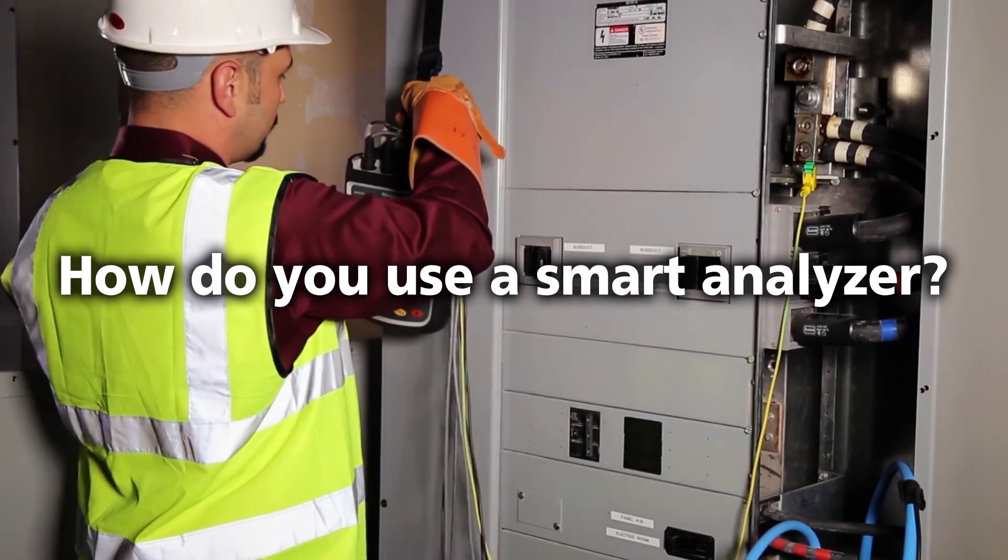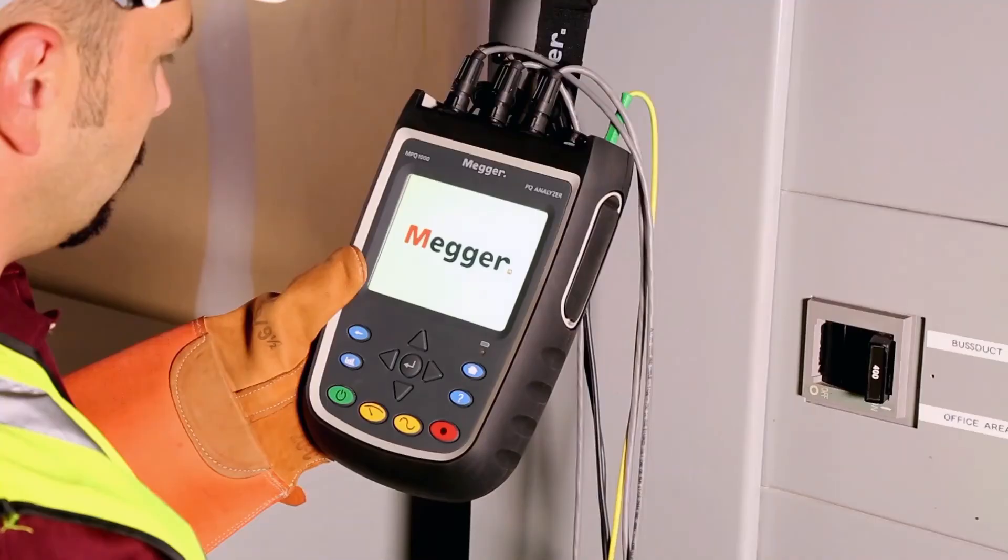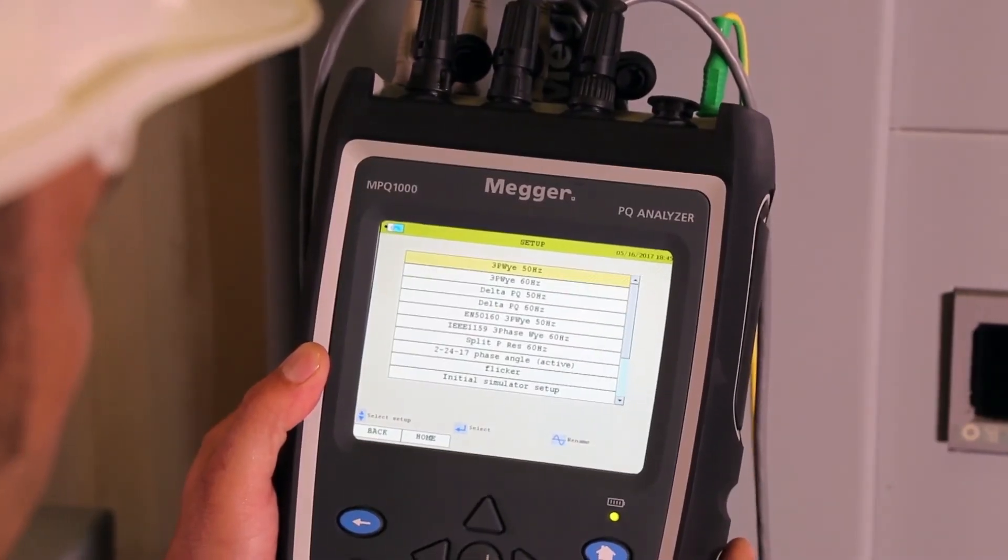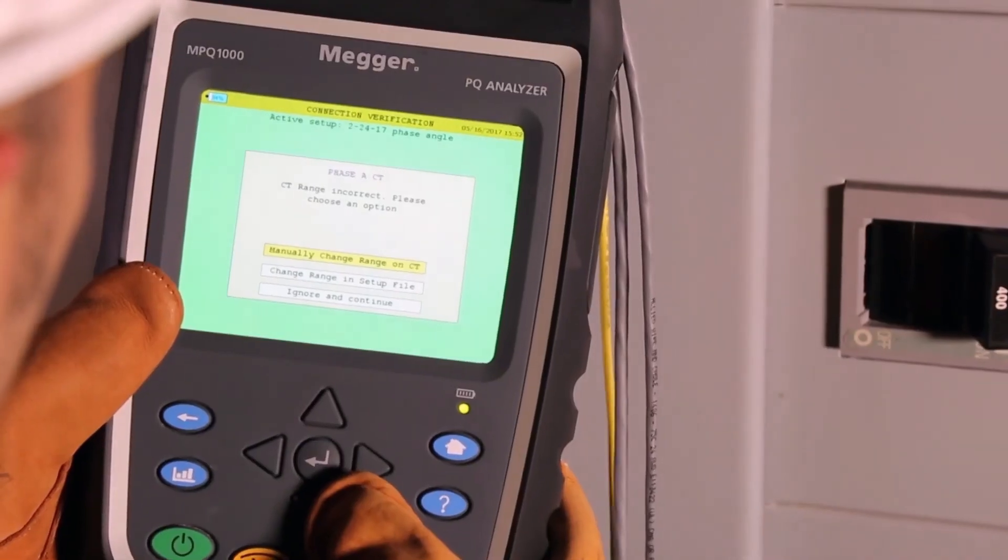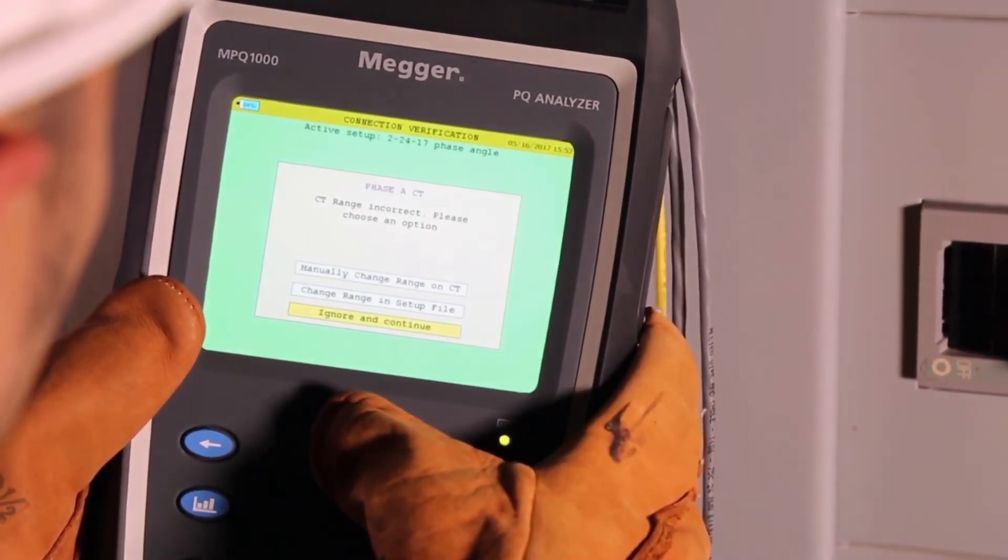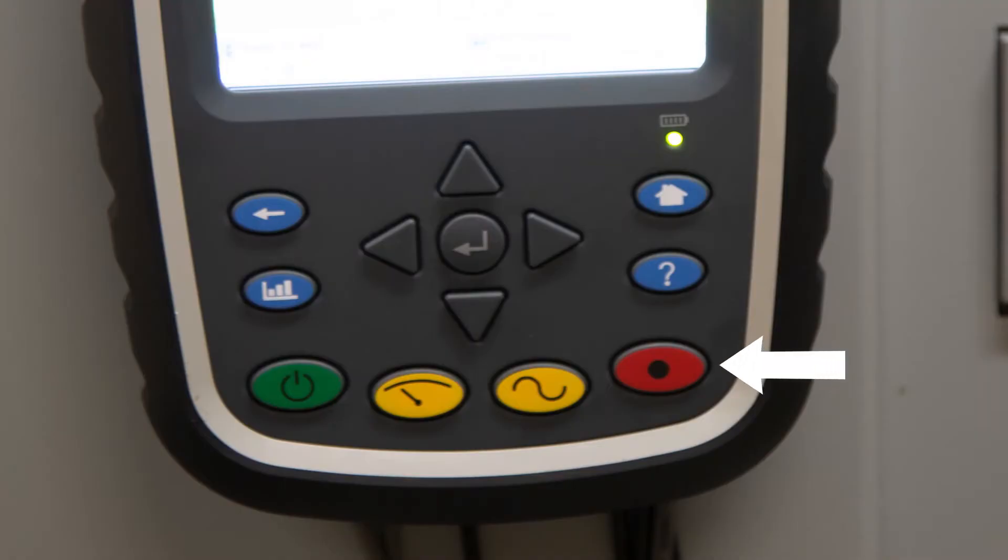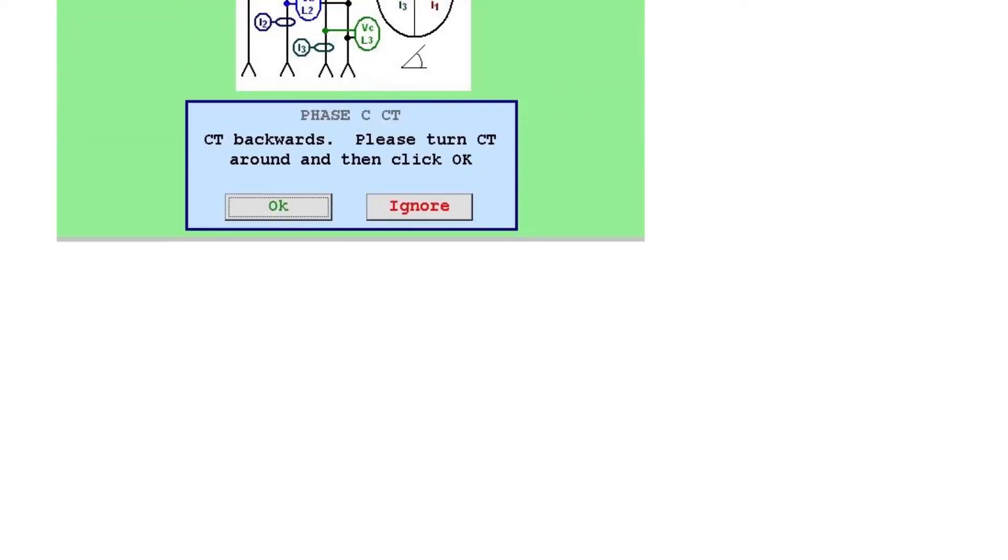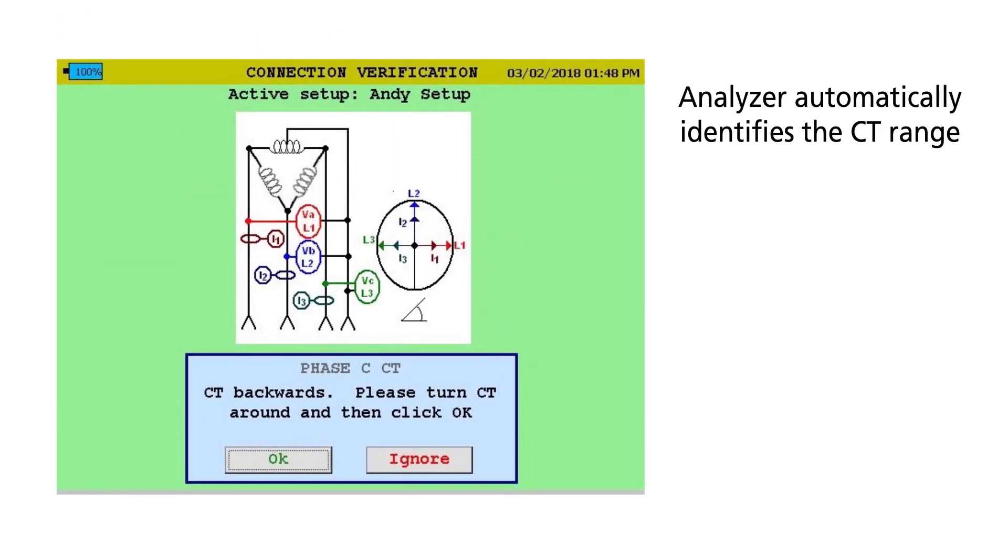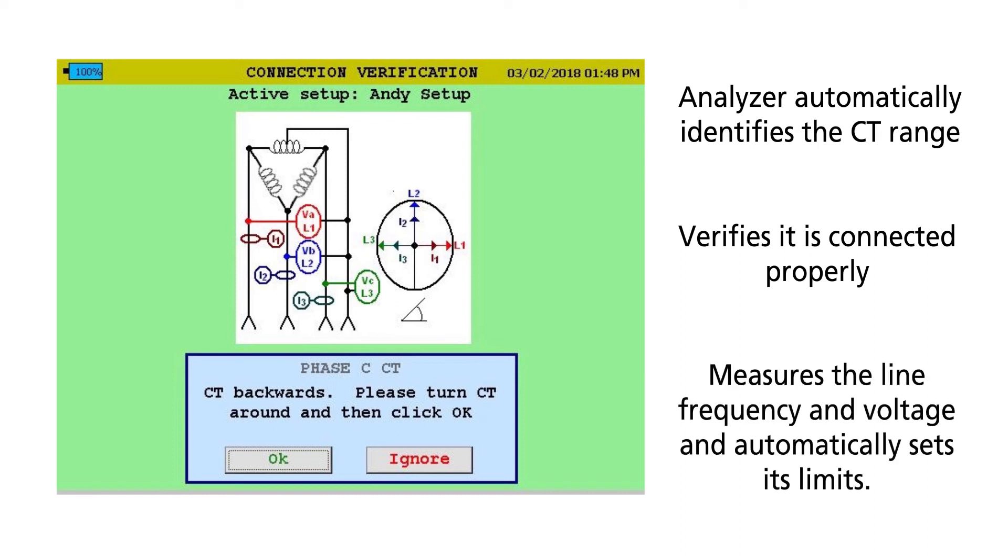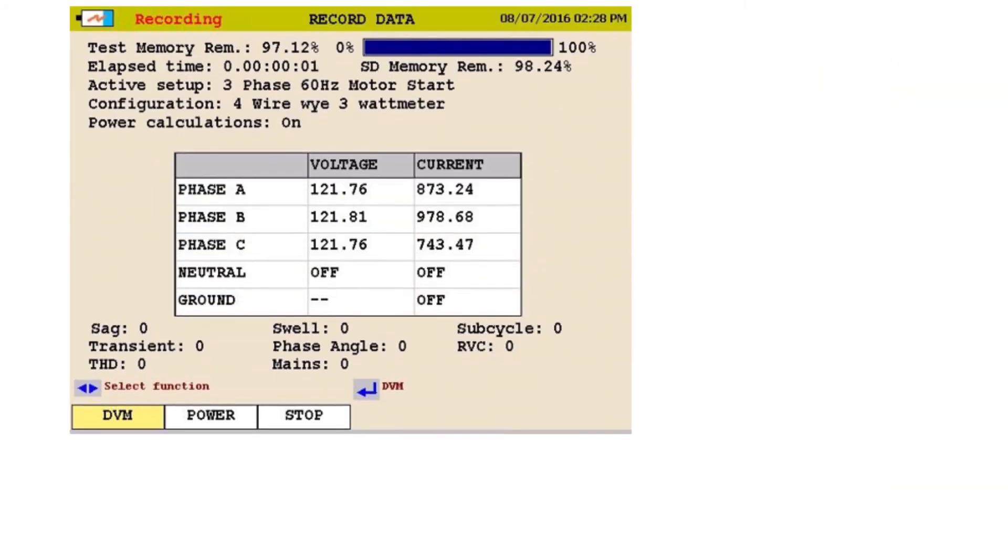So, how do you use a smart analyzer? Simply connect the analyzer, select the desired setup or configuration. There's no need to create setup files unless you want to. Set your CT range on your 4-range CT, press the button and start recording. The MPQ analyzer will automatically identify the selected range on the connected current clamps. It'll let you know if it's connected incorrectly. And the MPQ analyzer will now measure the line voltage and frequency and automatically set up all its event limits. The MPQ then starts recording.